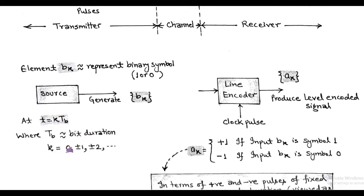And k is an integer having value 0, ±1, ±2, etc. The element b_k represents binary symbol 1 or 0.